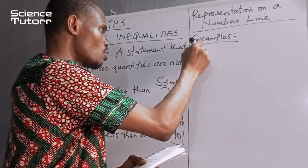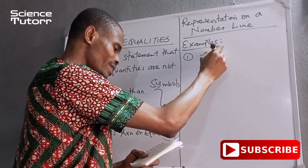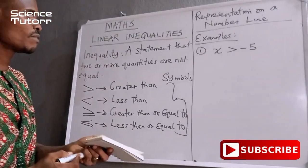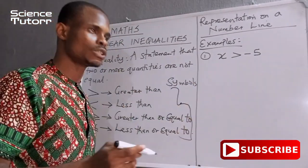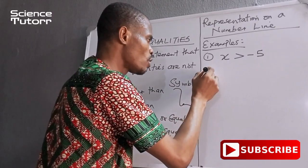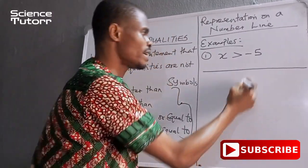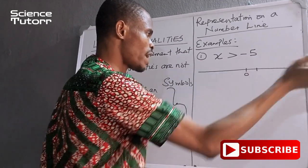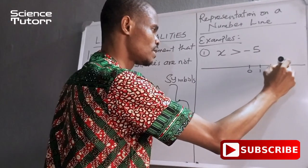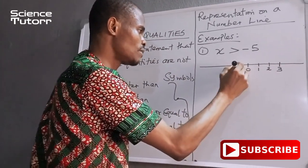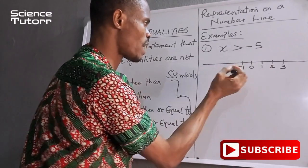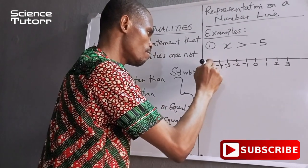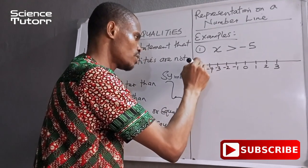For example, the first one: we have x to be greater than minus 5. Now in handling a situation like this, I am going to draw my number line. A number line begins from the middle, which I call zero. Moving to the right hand side we have the positive numbers; moving to the left hand side we have the negative numbers. That is where minus 5 falls — minus 1, minus 2, minus 3, minus 4, minus 5.